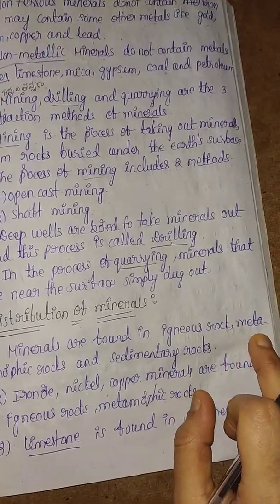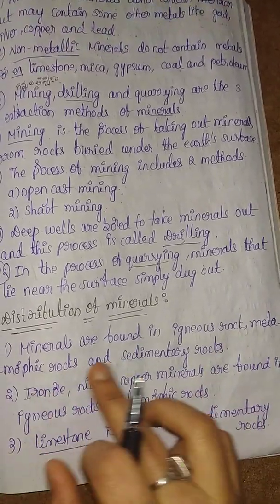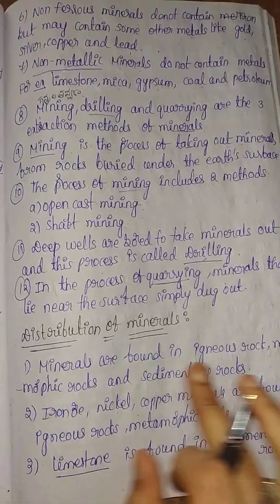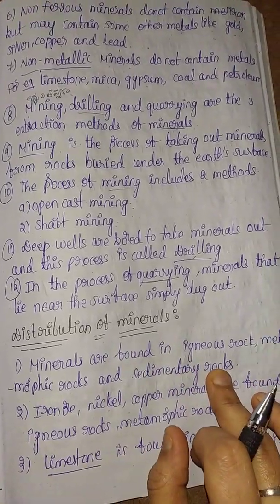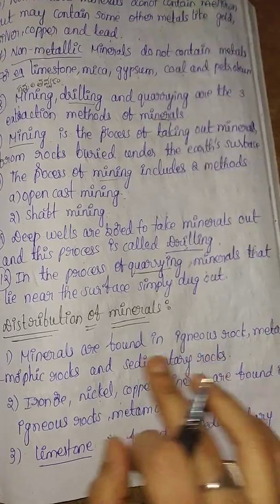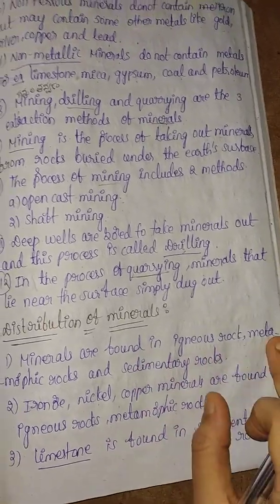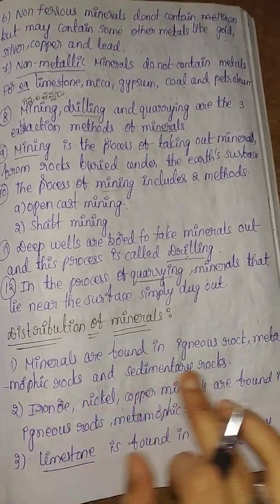Minerals are found in igneous rocks, metamorphic rocks, and sedimentary rocks. We have already found the rocks classification. We have three types: igneous rocks, metamorphic, and sedimentary.